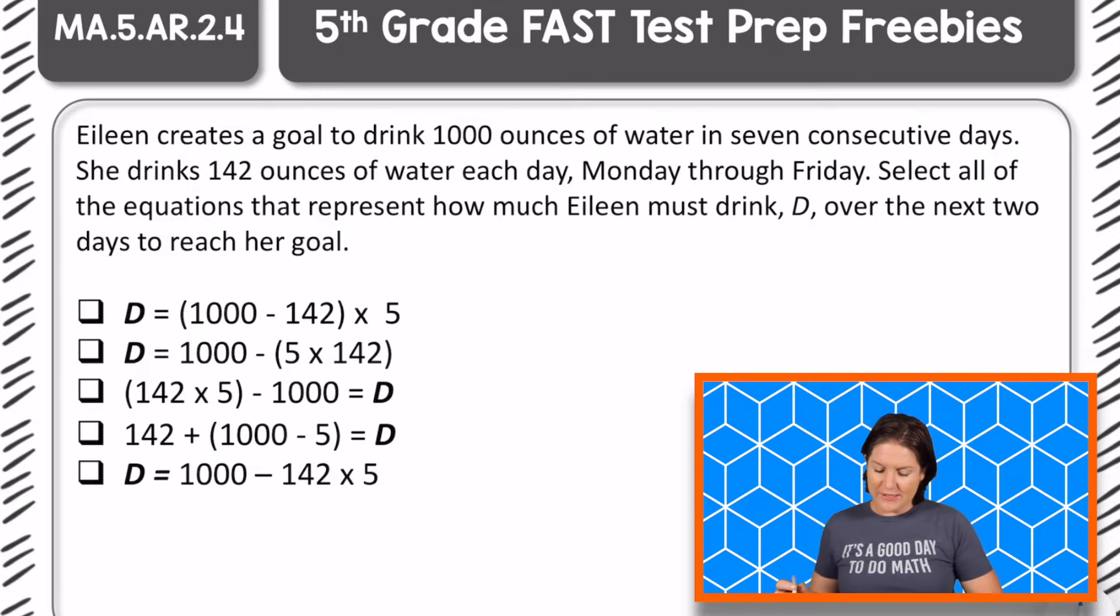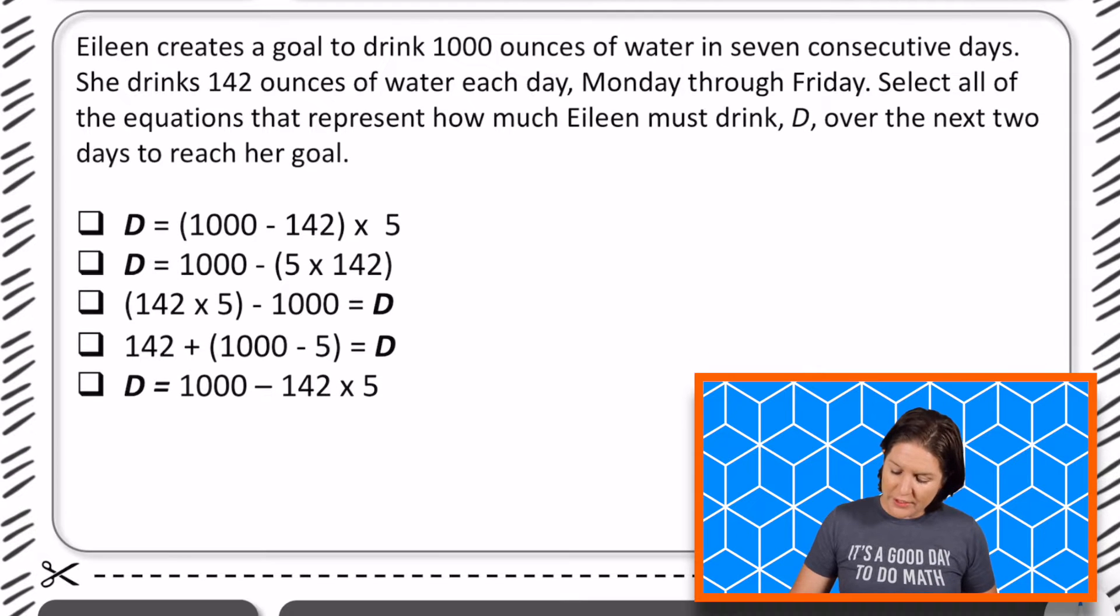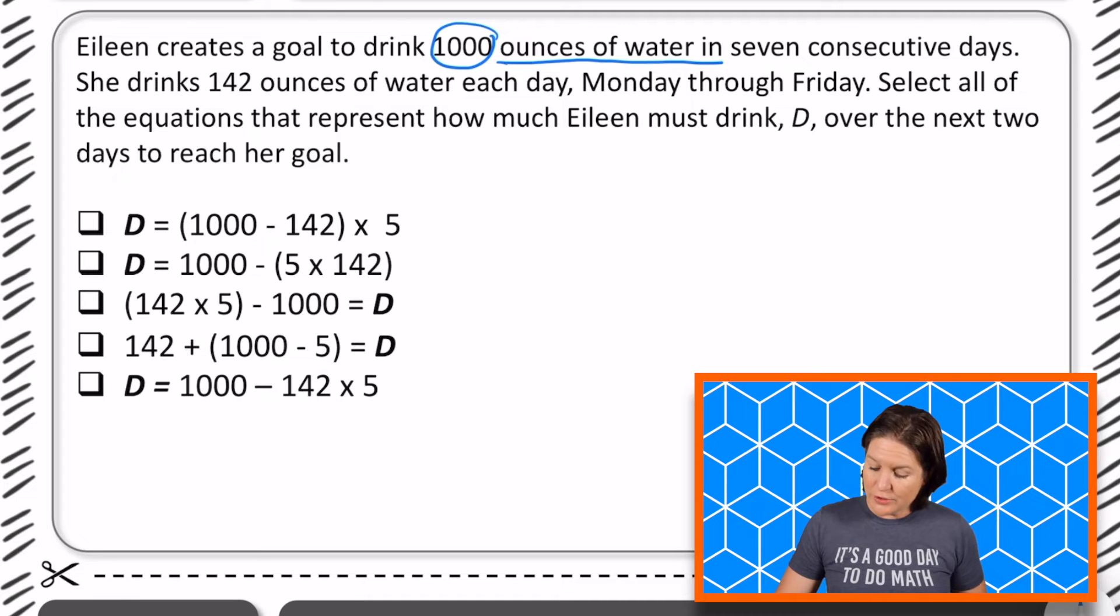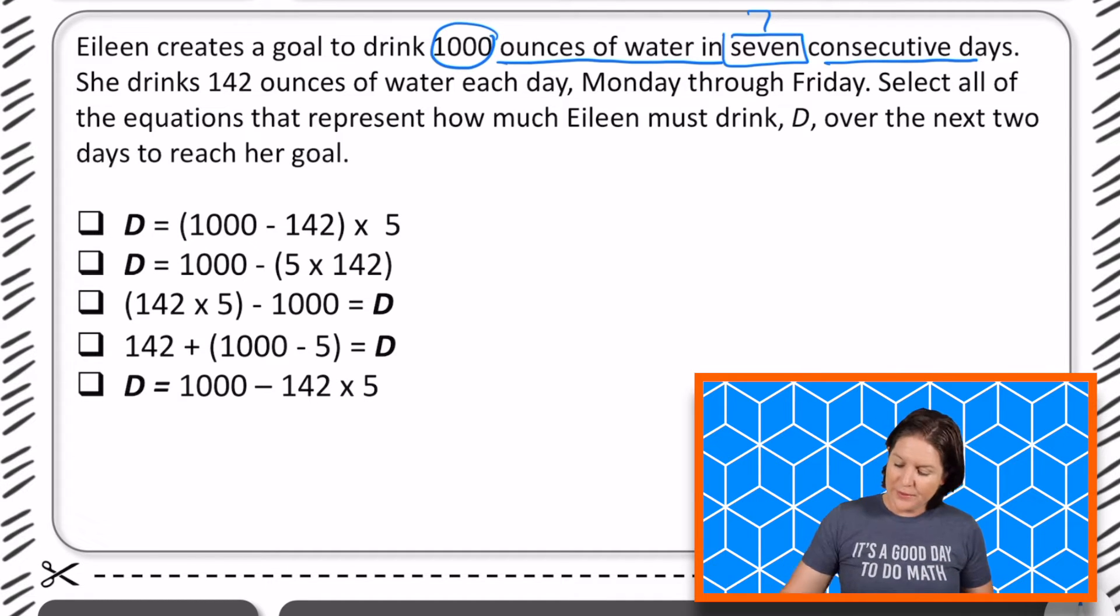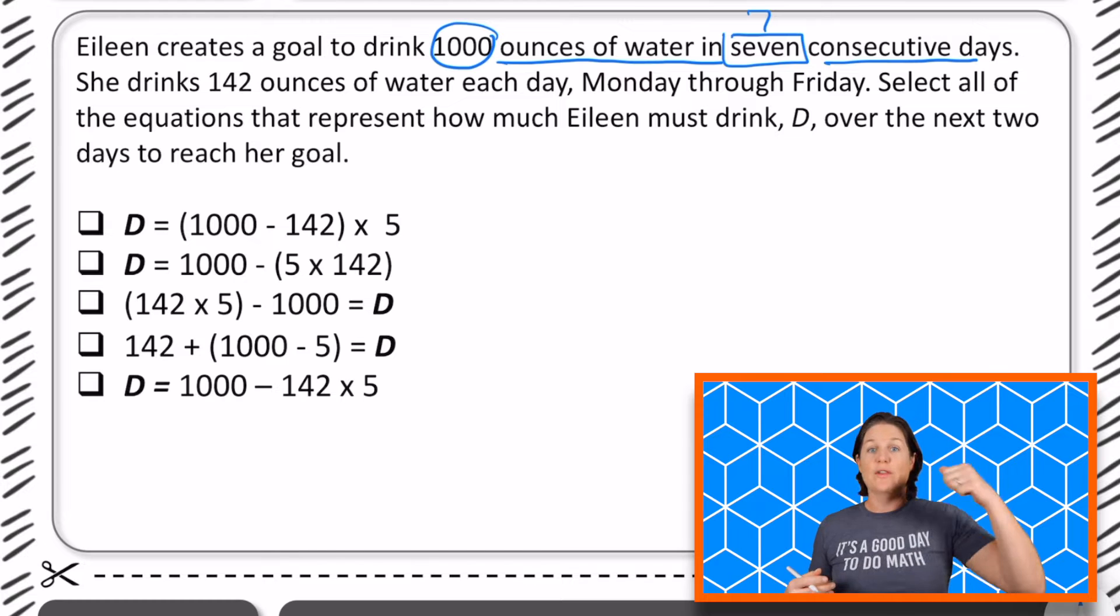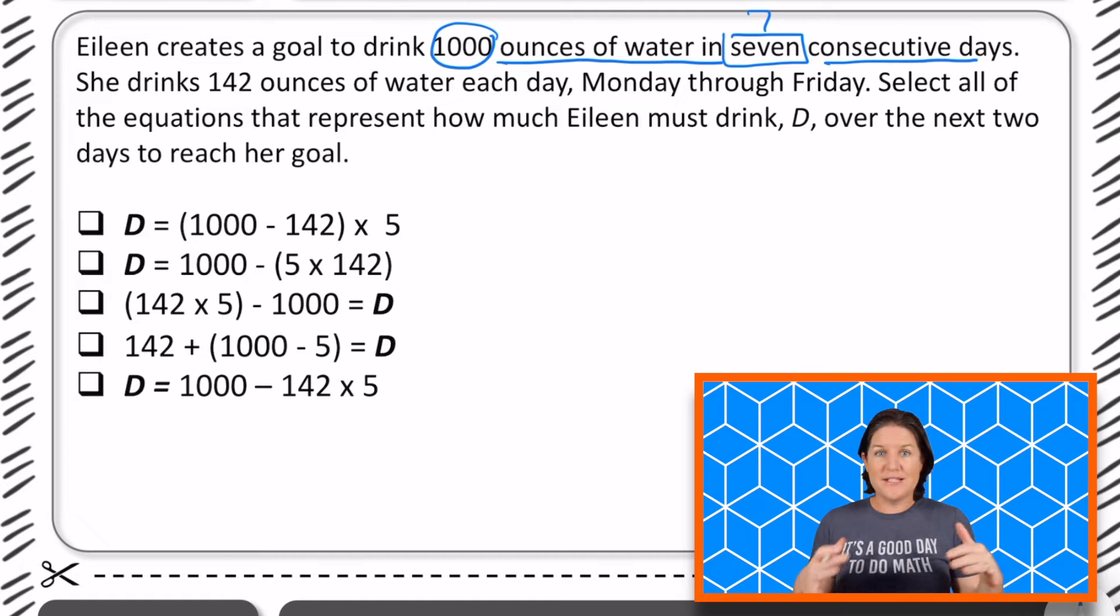Welcome back, fifth grade. Let's go ahead and take a look at this one. So it says, Eileen creates a goal to drink 1000 ounces of water in, ooh, there's a word form there, in seven consecutive days. Do you know what consecutive means? It means one right after the other. Seven consecutive days. So that would be Monday and then Tuesday and then Wednesday, a day right after the other with no missing days in between.